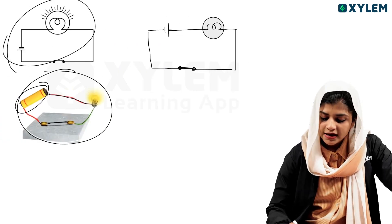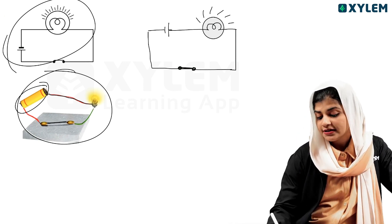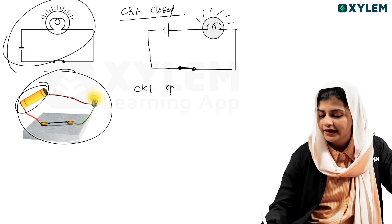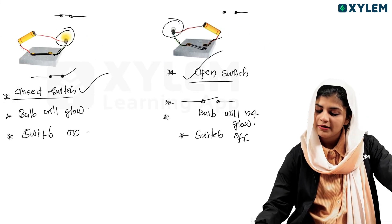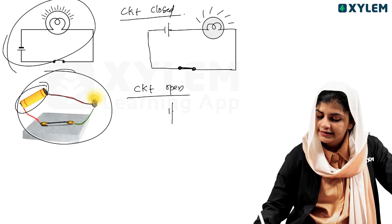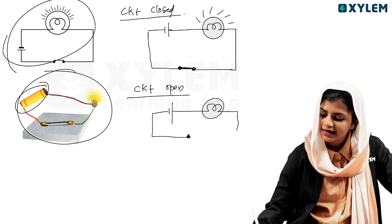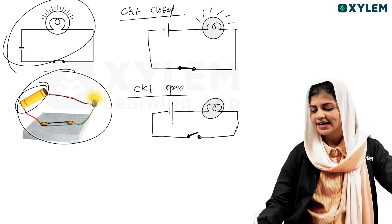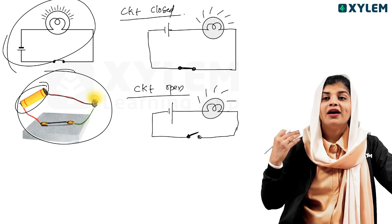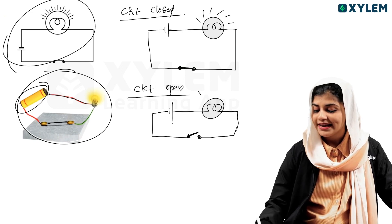In a closed circuit condition, the switch is closed and the circuit is complete. In an open circuit condition, the circuit is not complete — there is no path for current, and the bulb will not glow. That is how a simple electric circuit works.